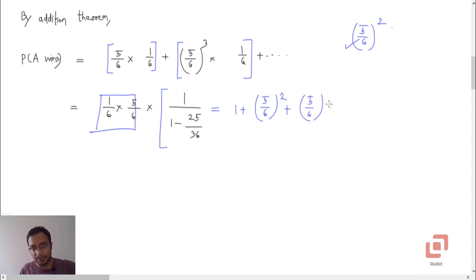So, because this GP has common ratio positive but less than 1, you can very easily use the formula 1 upon 1 minus R into A. But again, don't worry about the first term even because that is also 1. So, if you do it, it will be 5 by 36 into 1 upon 11 by 36. And that will lead to cancellation of 36. And the required probability will be 5 by 11, which is option B.